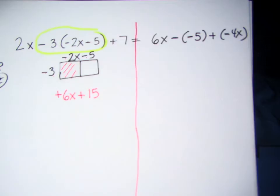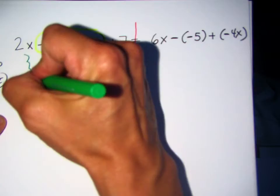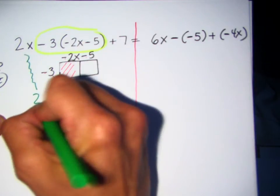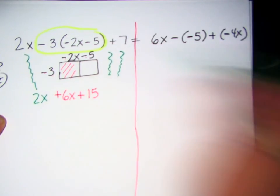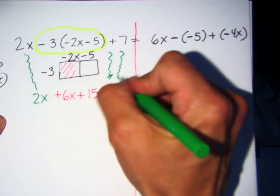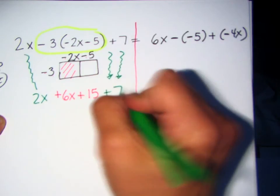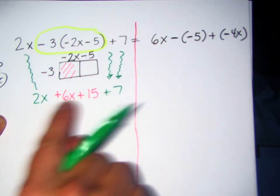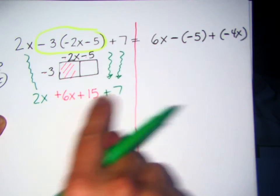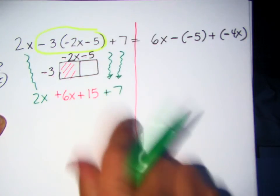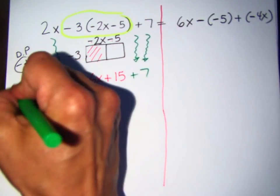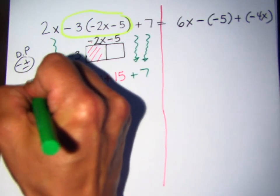All right, so now what's going to happen? I'm going to go ahead and draw the 2x, and then the positive 7. So I'm going to stick to this side. So now I have 2x plus 6x plus 15 plus 7. Do I add them all up? No. What am I going to do? Combine like terms.